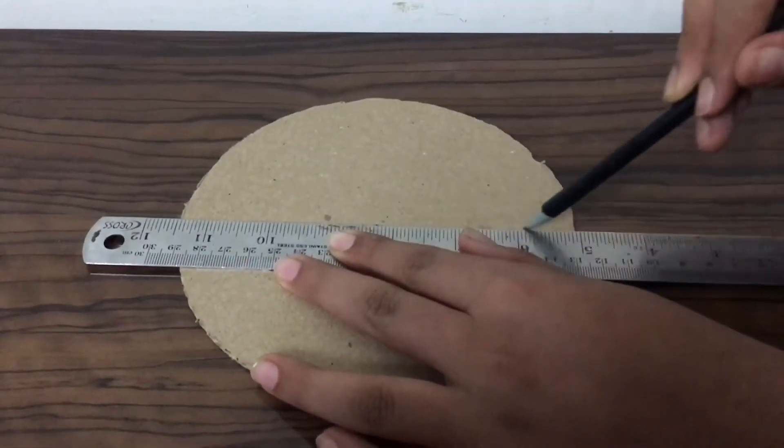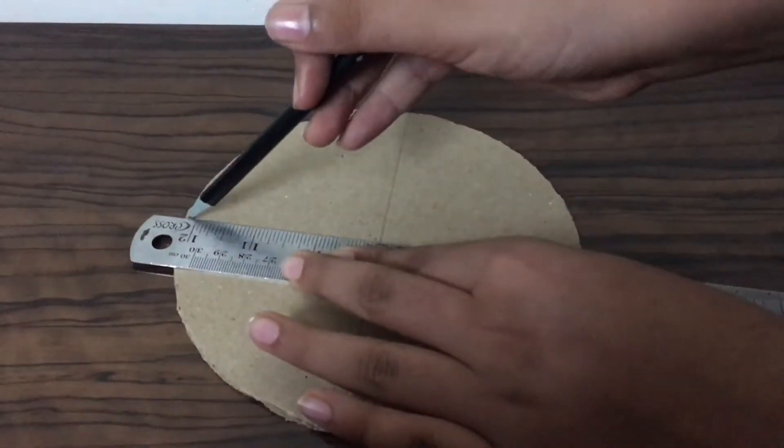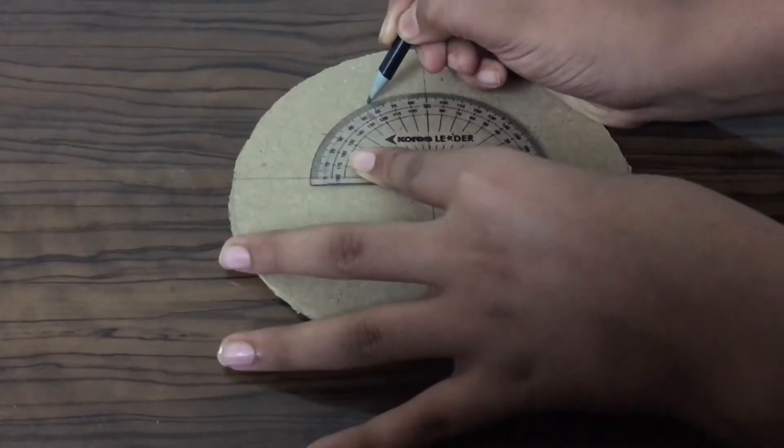Now we need to mark out the lines of the four cardinal directions, then the sub-directions and then we mark out points that are 30 degrees apart.